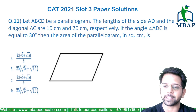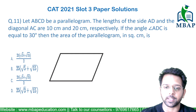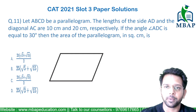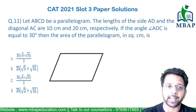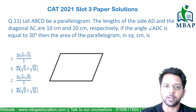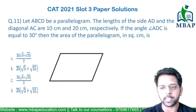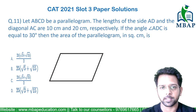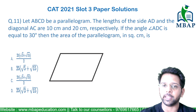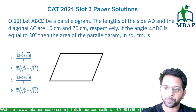Hi everyone, now let's see the next question. Read the question well. The question says: let ABCD be a parallelogram. The length of side AD and the diagonal AC have been given as 10 cm and 20 cm respectively. If the angle ADC is equal to 30 degrees, then the area of the parallelogram has been asked.